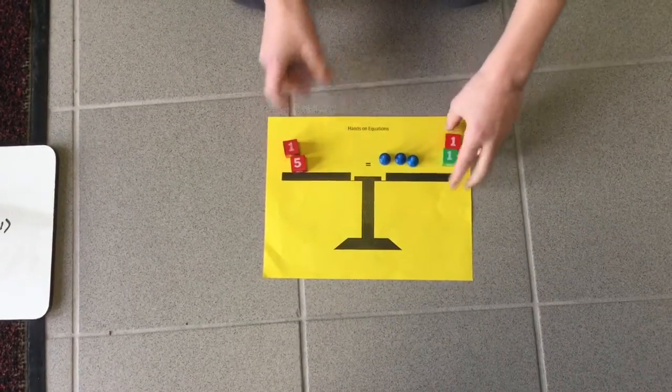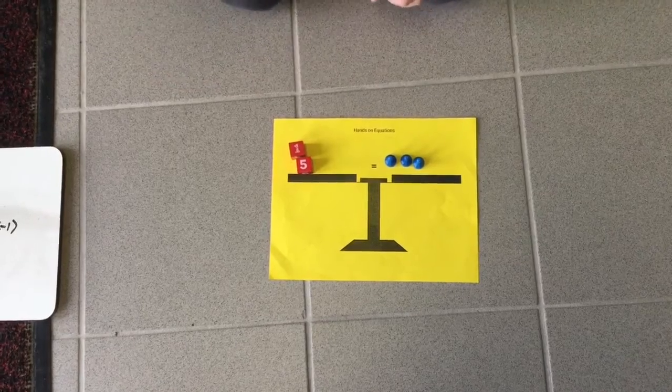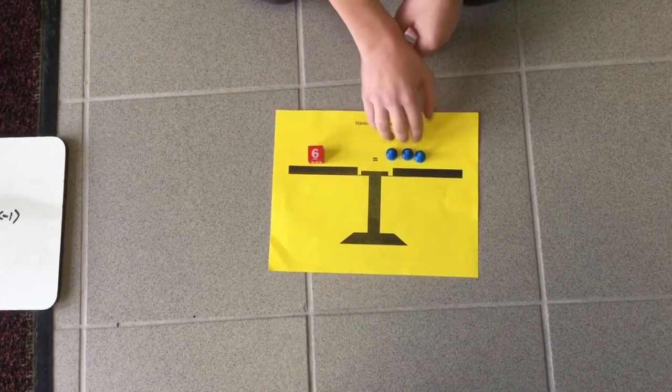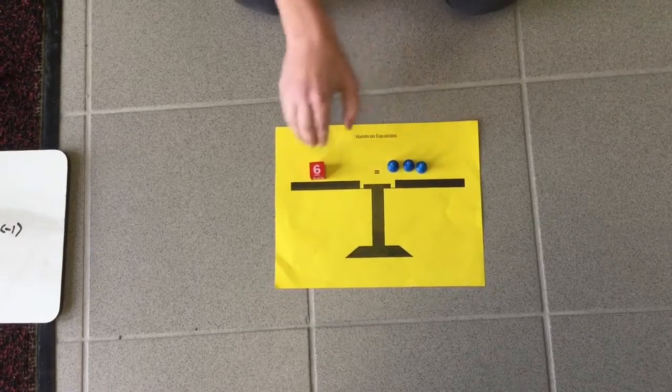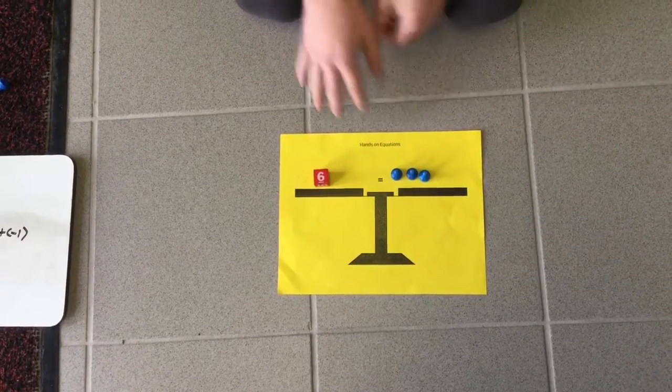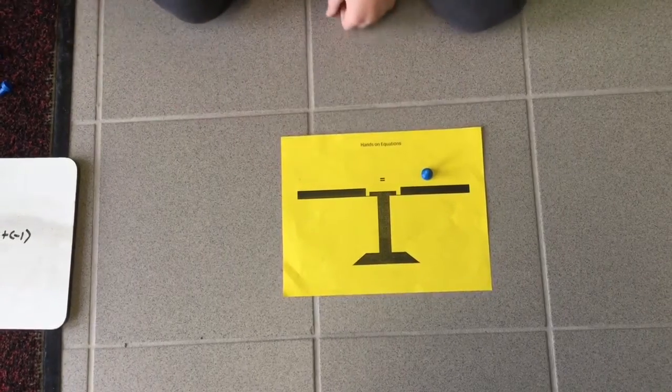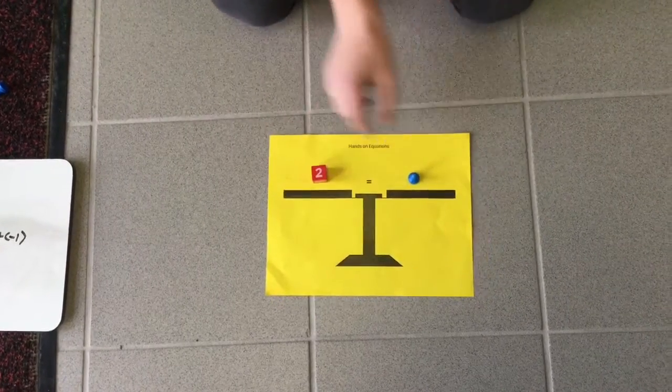You want to get rid of this negative 1, so you add a positive 1 to each side. Get rid of the pair of 0, and this is 6, so 3x equals 6. Now divide by 3, divide each side by 3. This is 1 and this is 2, so x equals 2.